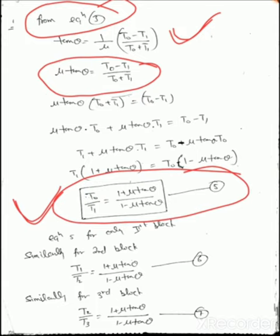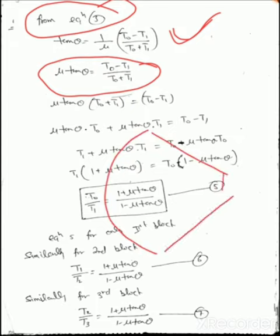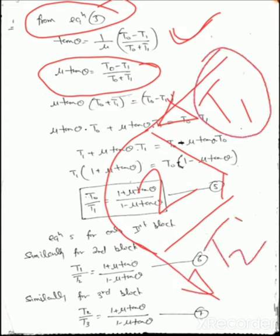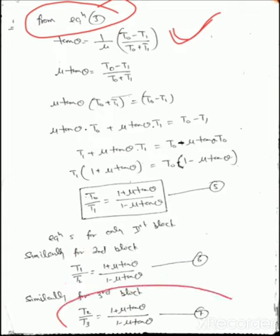Similarly for block number 2: T1/T2 = (1 + μtanθ) / (1 − μtanθ). For block number 3: T2/T3 = (1 + μtanθ) / (1 − μtanθ).